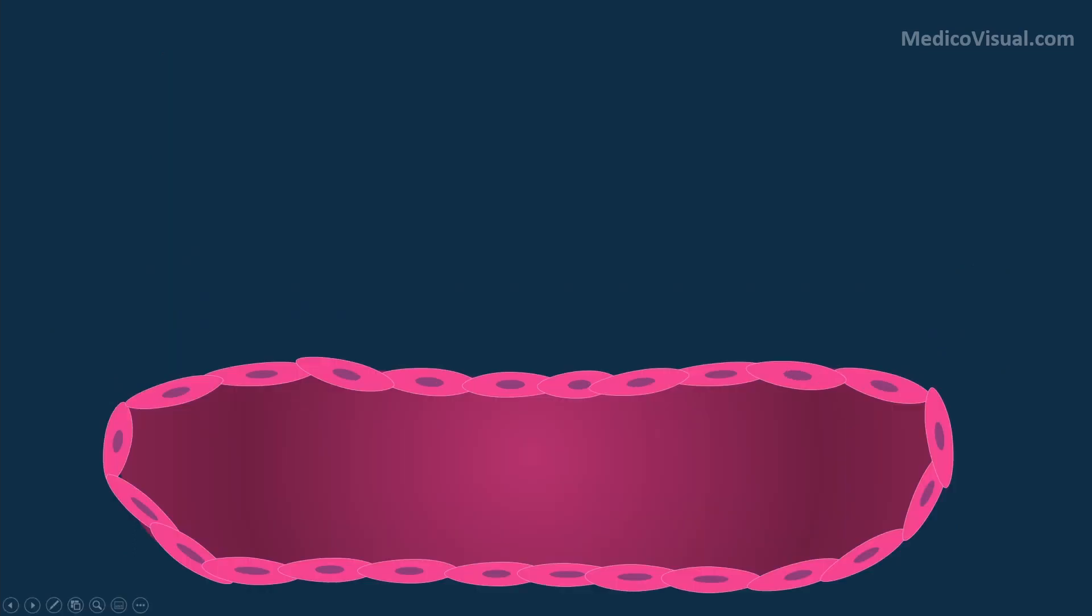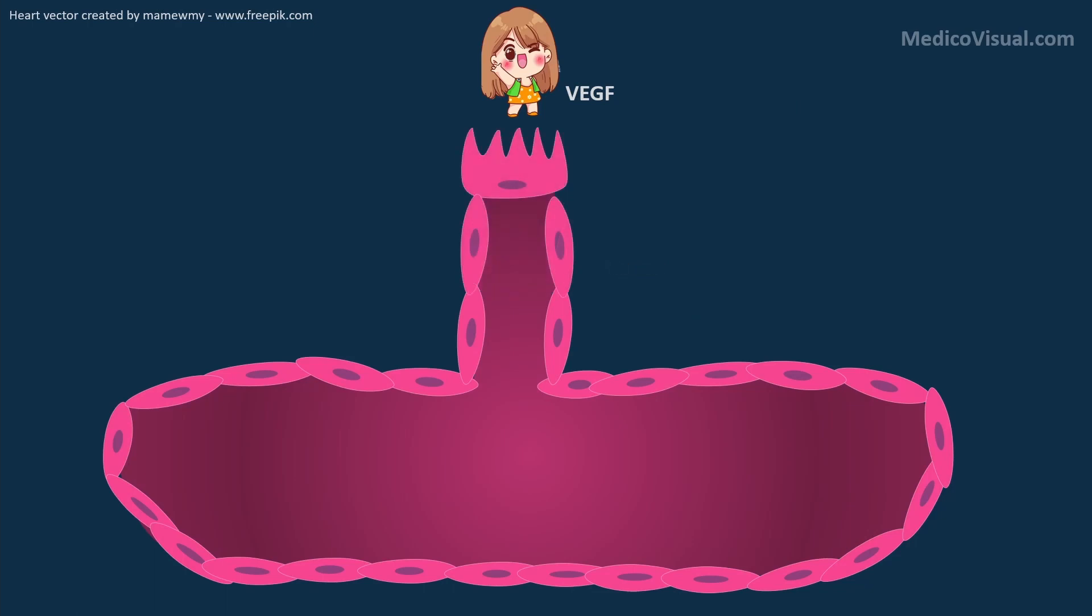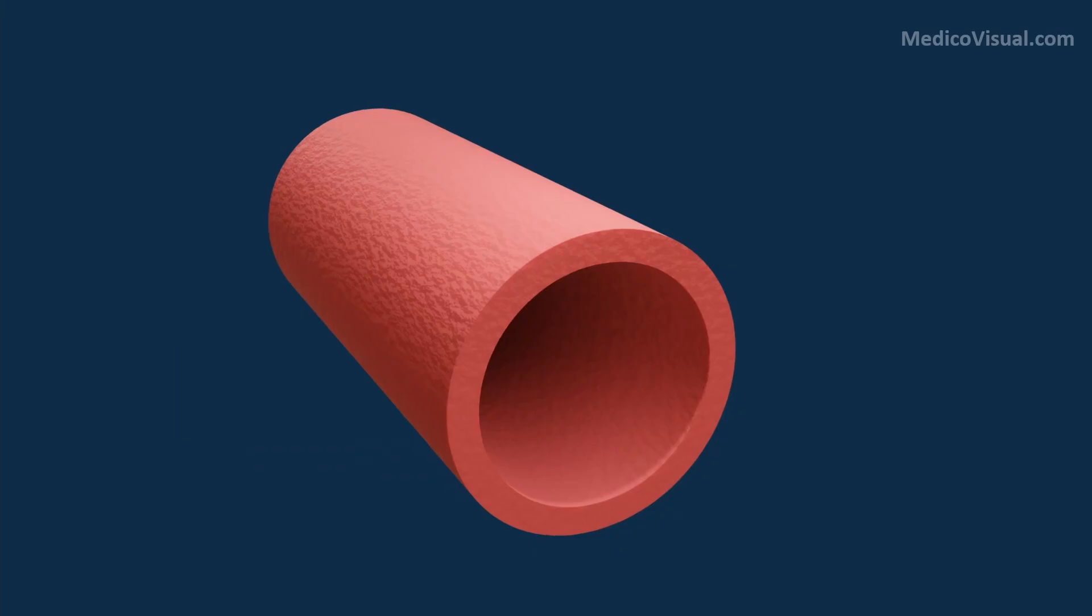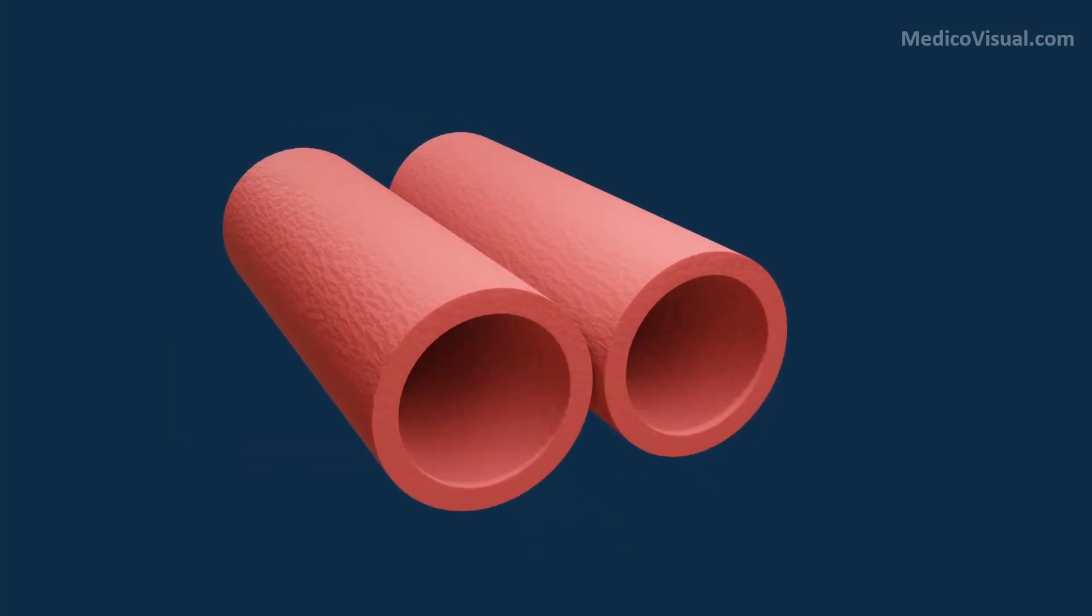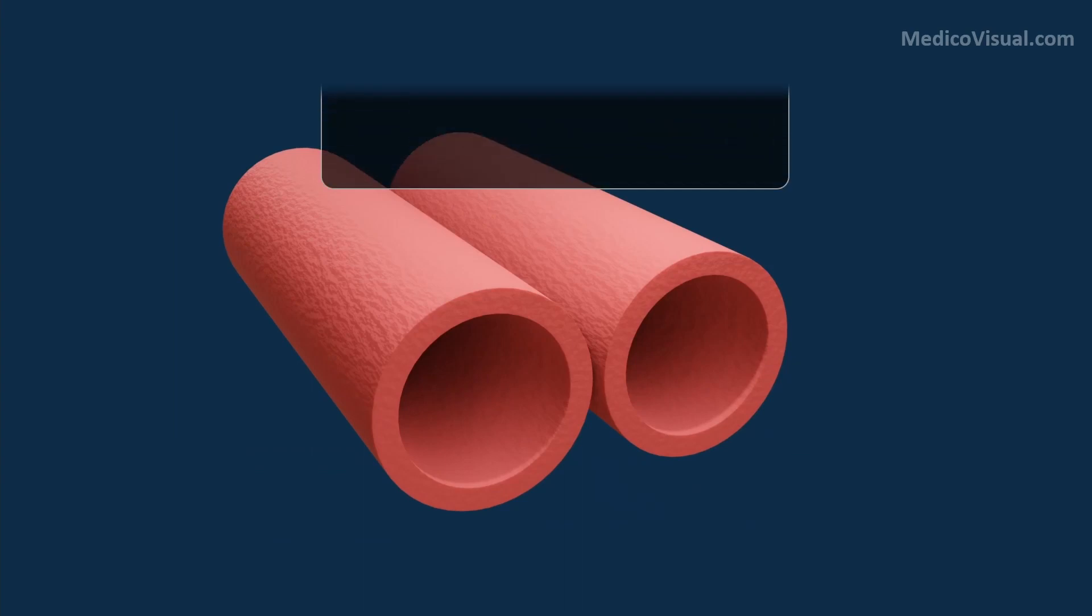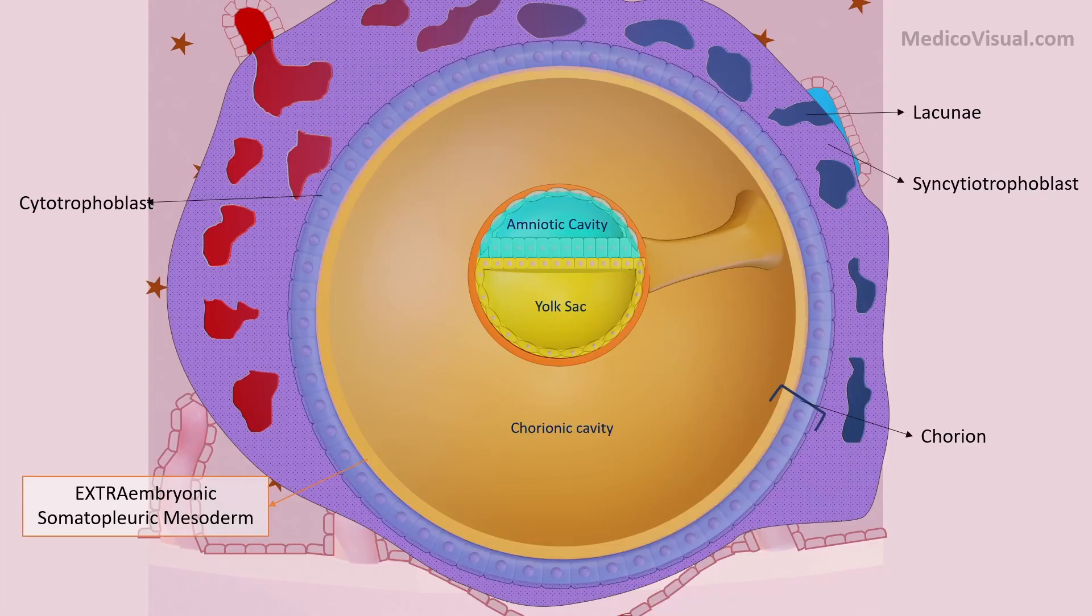A type of the endothelial cells called the tip cells sprout towards the VEGF and form a totally new vessel from the existing vessel. This process is called sprouting angiogenesis. In another type of angiogenesis called splitting angiogenesis or non-sprouting angiogenesis, a vessel literally separates into two. Angiogenesis is an embryologic as well as a postnatal process.